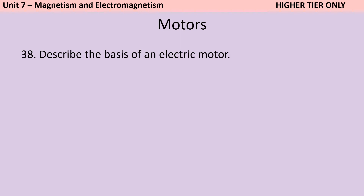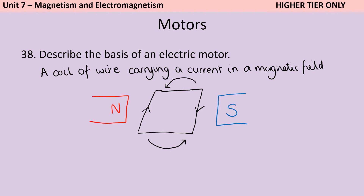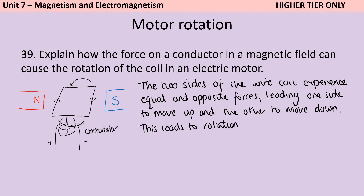A motor is made from a coil of wire which is carrying current in a magnetic field. The current moves around the coil, always moving from positive to negative, and this coil is placed in a magnetic field — made either from a U-shaped magnet or from two separate static magnets. This causes the coil of wire to rotate. In order to make this rotation continue always in one direction rather than flip-flopping back and forth, we need a split ring commutator. Because the current is moving around in a circle, the force felt by the two sides of the coil is opposite — the left side is pushed down whereas the right side is pushed up — and this leads to rotation.